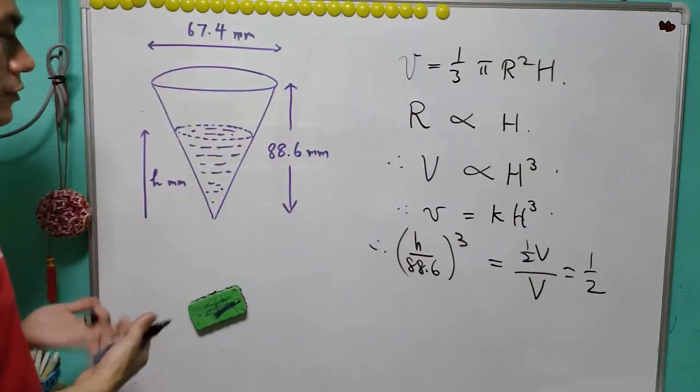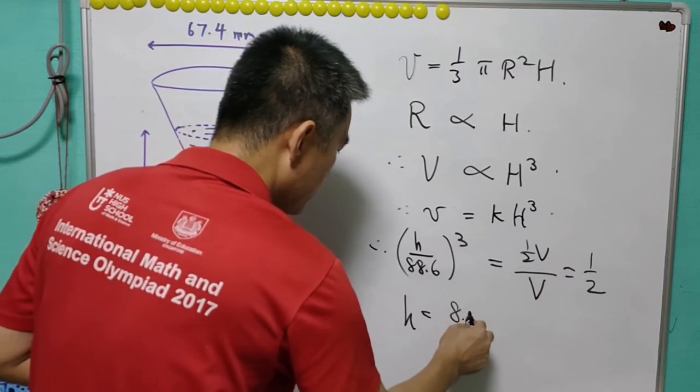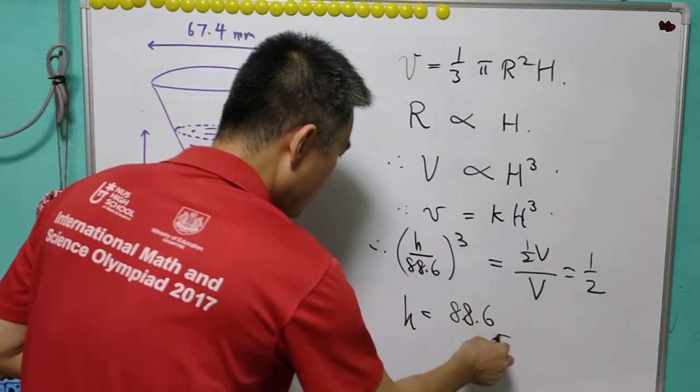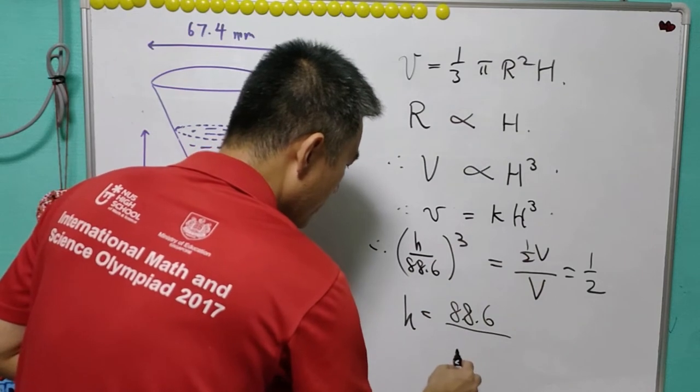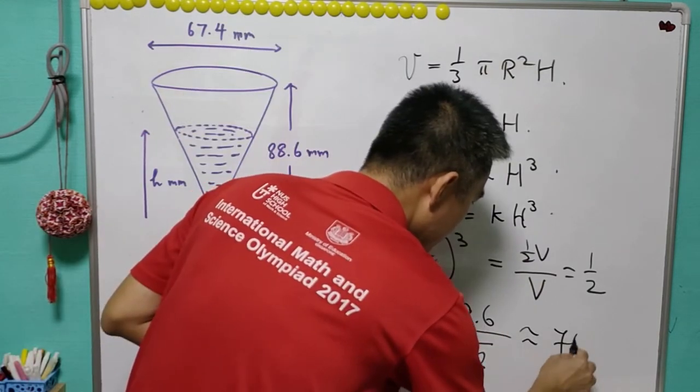So with this h will be just equals to 88.6 over cube root of 2. This is about 70.